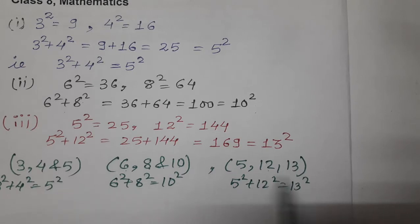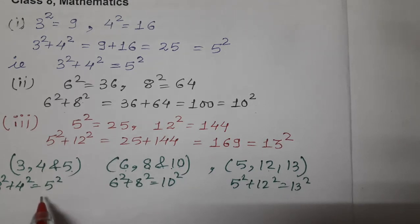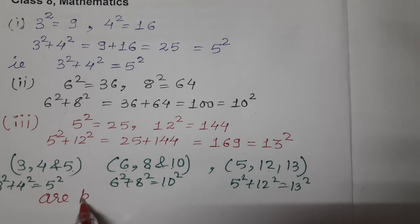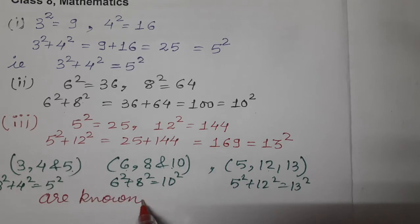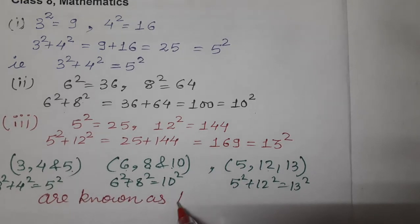And such numbers 3, 4, 5, 6, 8, 10, 5, 12, 13 are known as Pythagorean triplet.